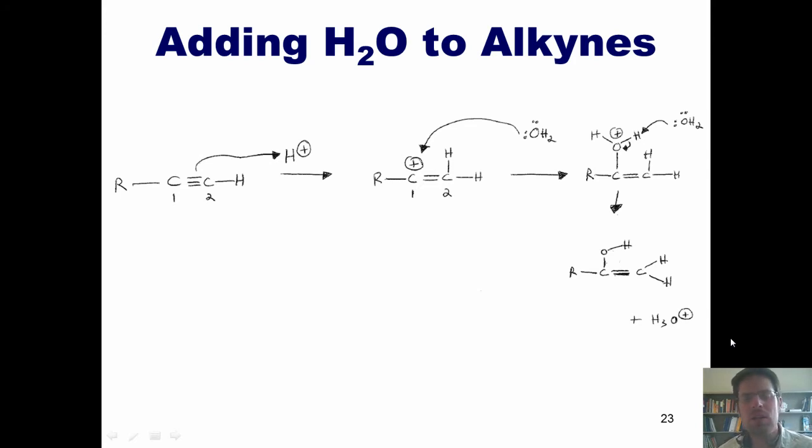Now, I want to point out something very, very important. This type of product right here is called an enol. The reason is because it has an alcohol and an alkene together in one molecule. We take the word alkene and the word alcohol and squish them together into one word. The word is enol.